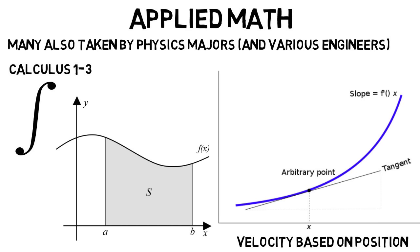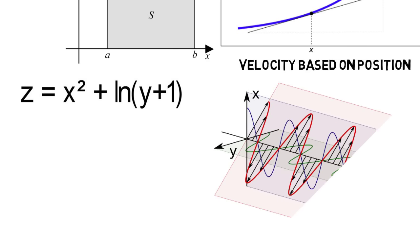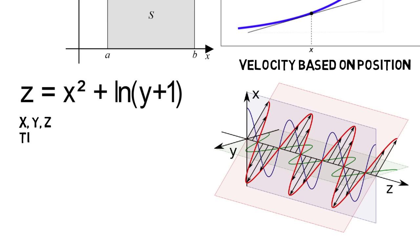And then in calculus three, you learn these topics again, but you'd use them for functions of multiple variables like x, y, and z, or more. This is important because in the real world, functions that represent complex systems like this electromagnetic wave typically have more than two variables. Some might include x, y, z, time, temperature, voltage, etc.